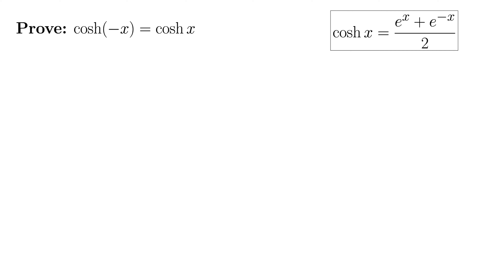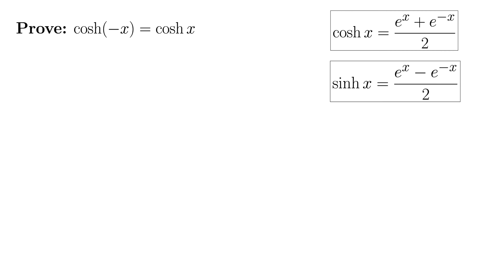Let's bring up the sinh definition as well. Sinh of x is e to the x minus e to the minus x, all over 2. The only difference is sinh x gets the negative and cosh x gets the positive. Let's prove this thing.